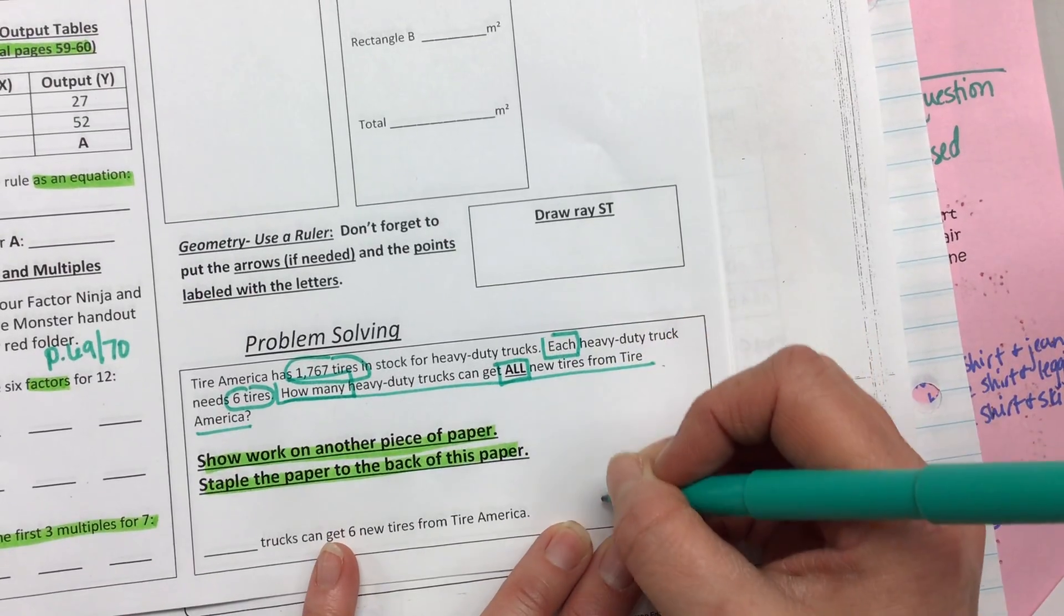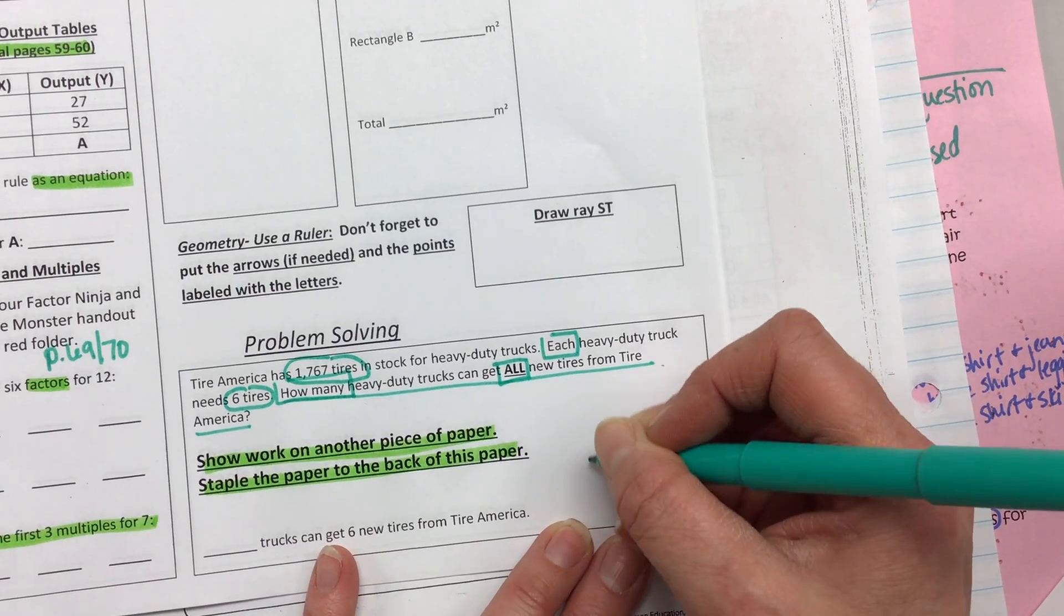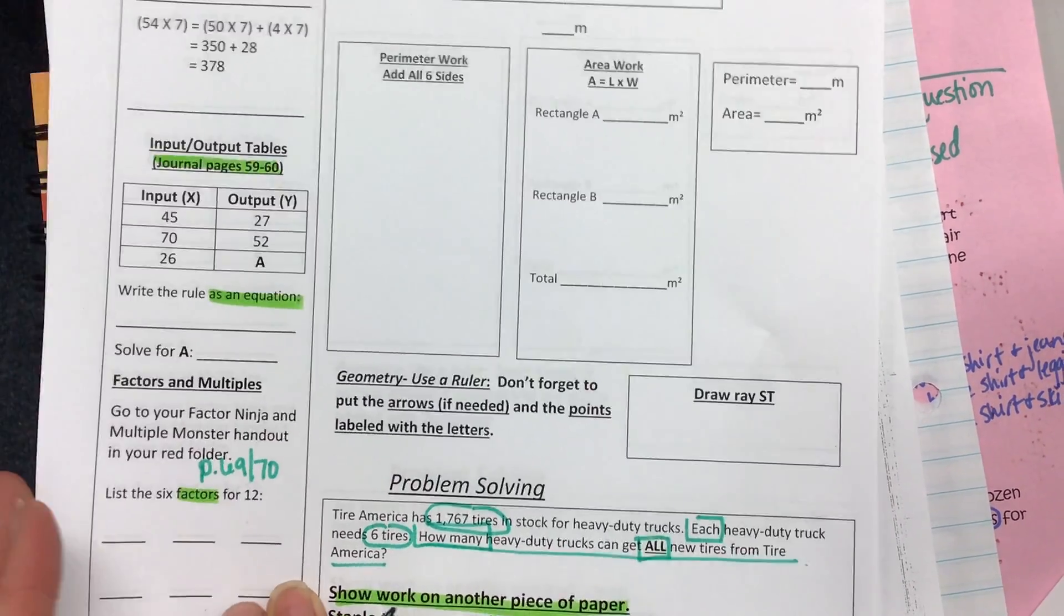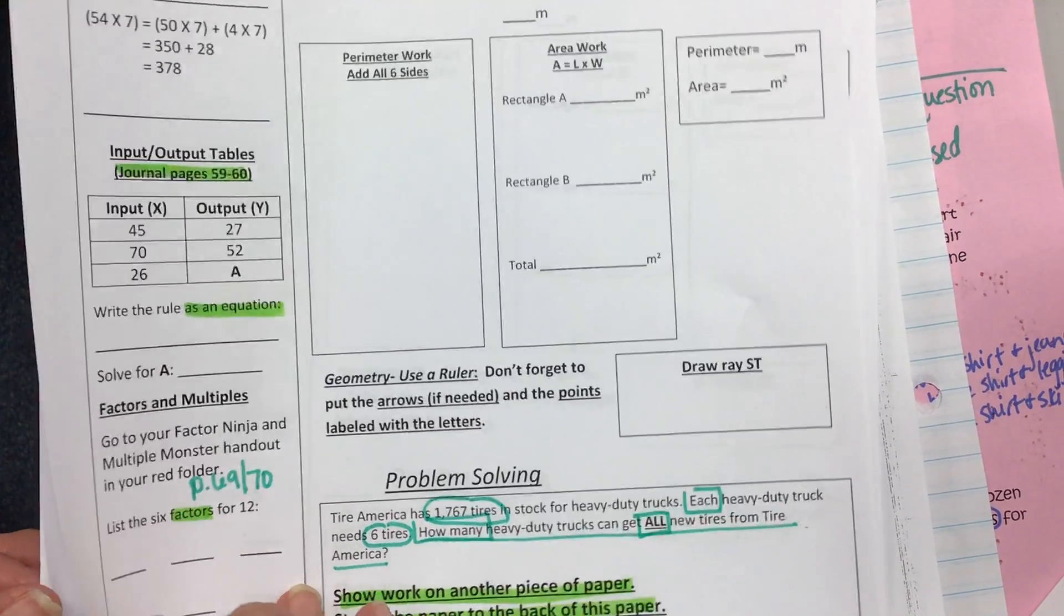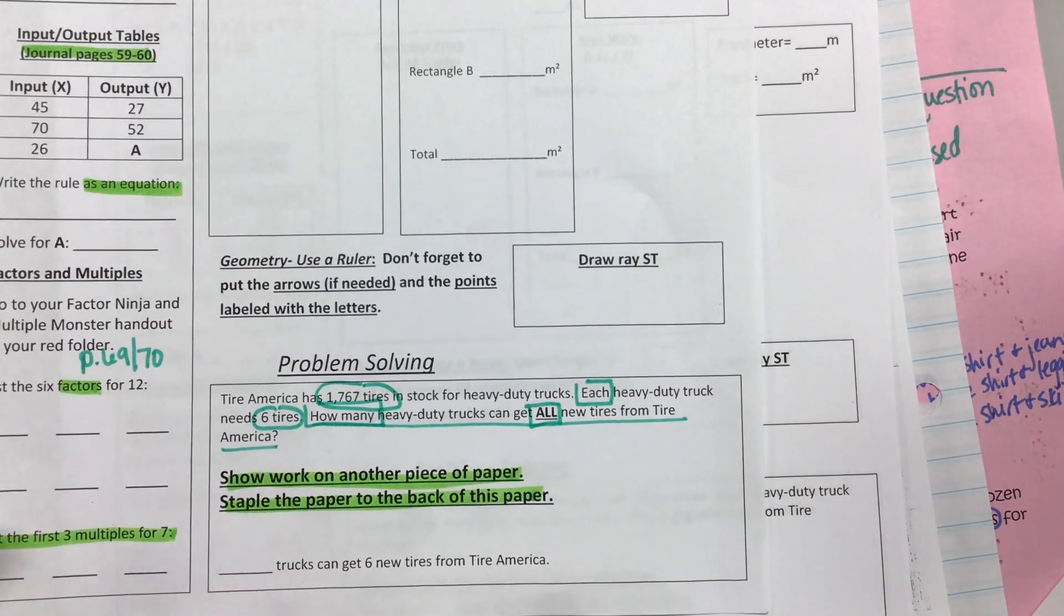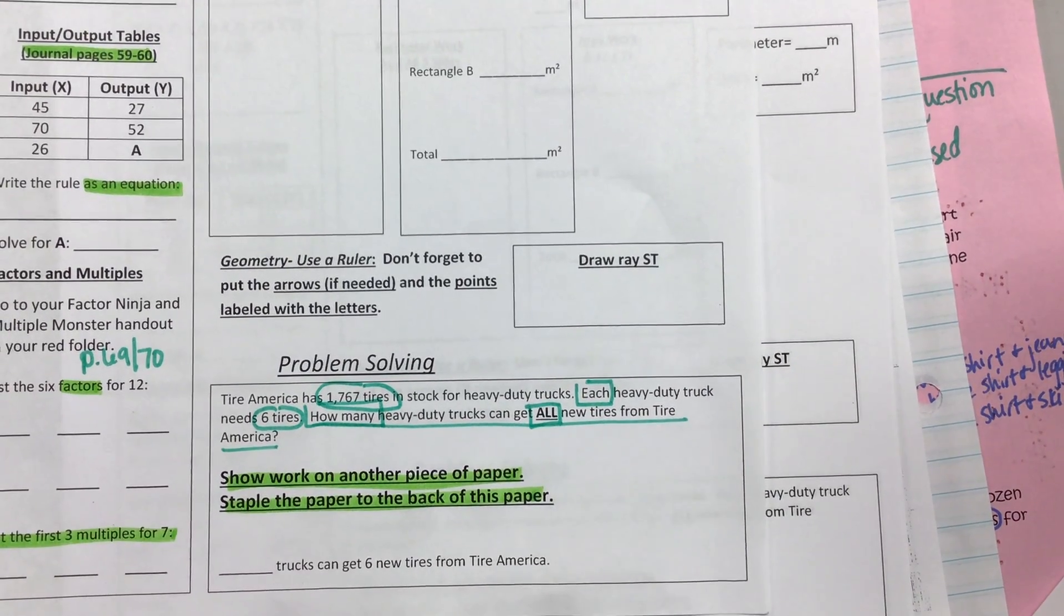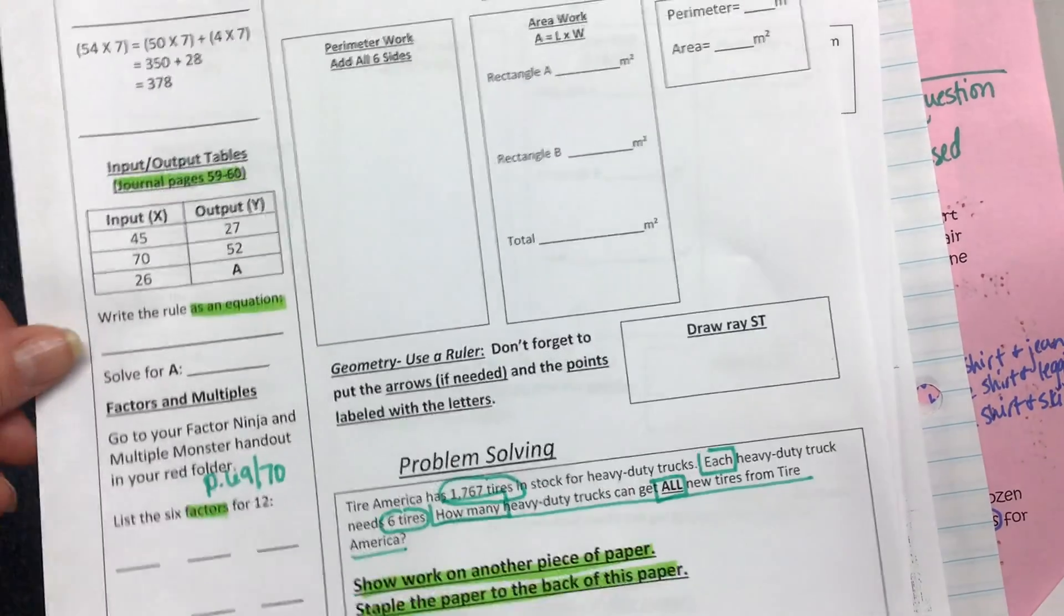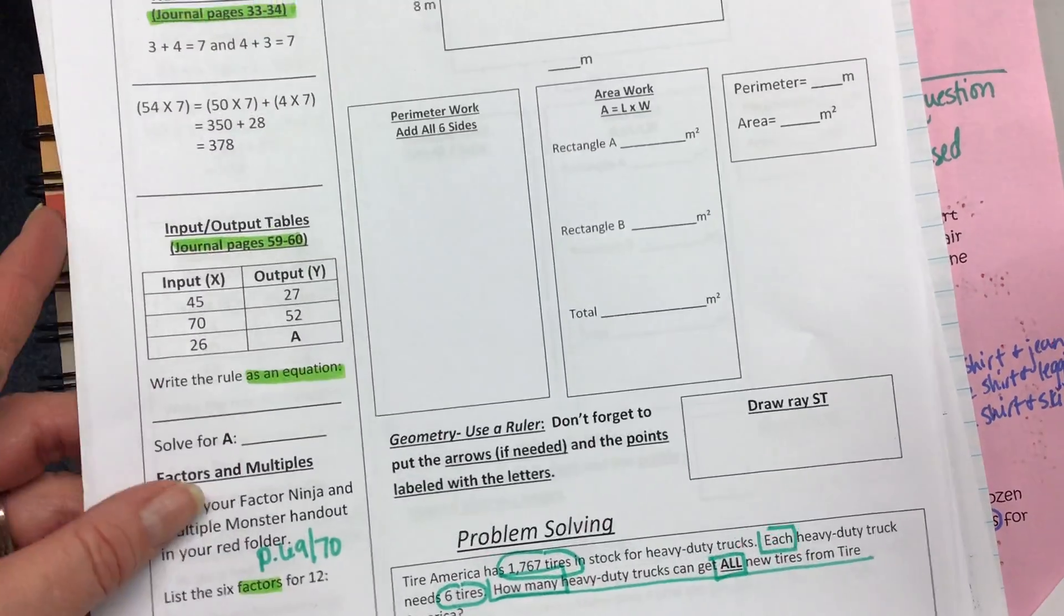And then I want you to look at this. It says show your work on another piece of paper and staple the paper to the back of this paper. So that means I don't want all your little steps shoved right here. I would actually accept if you wanted to turn your paper over and show your work. It does not say that you have to do a race. That's nice because it's only a four-day week. So I'll do two freebies. Who needs a freebie?